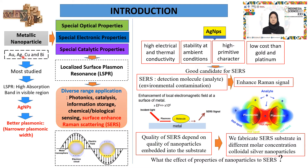The most commonly studied metallic nanoparticles are silver, copper, and bismuth, because they have a localized surface plasmon with high absorption in the visible region. In my experiment, we focus on silver nanoparticles because they have better plasmonic properties — a narrower plasmonic bandwidth than other metallic nanoparticles, as well as higher electrical and thermal conductivity, stability at ambient conditions, high refractive index sensitivity, and lower cost than gold and platinum. This makes silver nanoparticles a unique and good candidate for SERS.